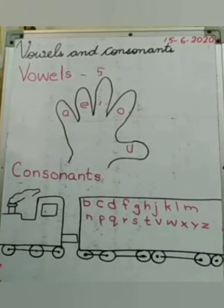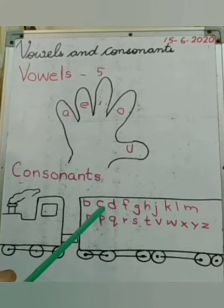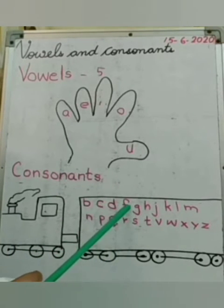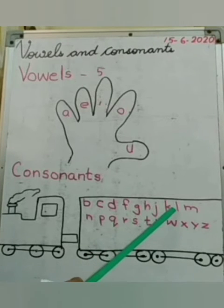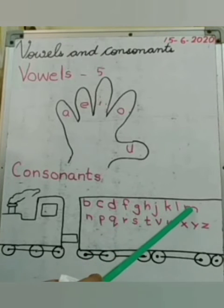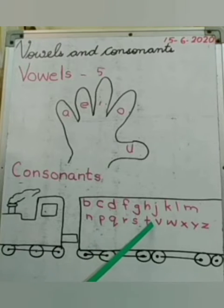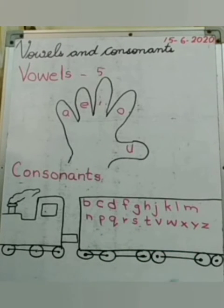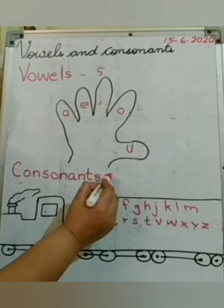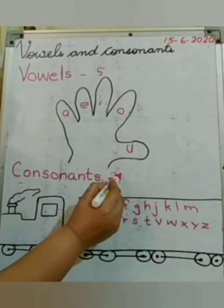So, these are consonants: B, C, D, F, G, H, J, K, L, M, N, P, Q, R, S, T, V, W, X, Y, and Z. How many consonants? 21.